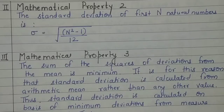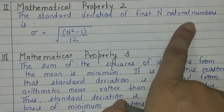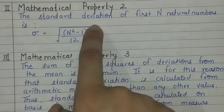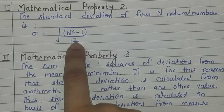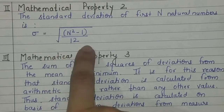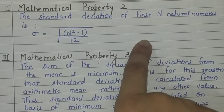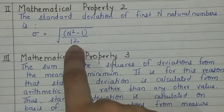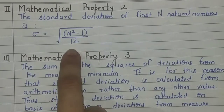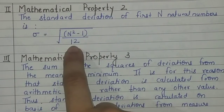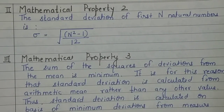Now let's jump to Property 2. Property 2 states that the standard deviation of the first n natural numbers can be calculated using the formula: square root of (n² − 1) / 12. Though it is a property, you can also be asked in the exam to derive it — how to show that the standard deviation equals this value for the first n natural numbers. We will also learn how to derive this equation in this video itself.